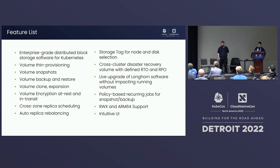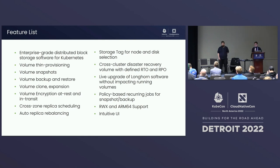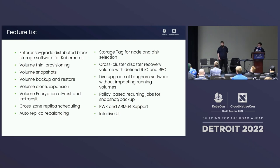I want to highlight some major feature items. First, thin provisioning of volumes lets you leverage your storage usage efficiently. We also have in-cluster snapshots, out-of-cluster backup and restore, and clone and expansion based on the CSI protocol - so all operations on your volume based on CSI work well with Longhorn. For security, we provide volume encryption in current versions, both at rest and in transit, based on the current Longhorn architecture.